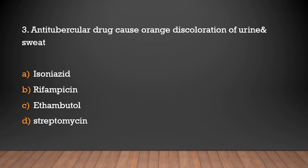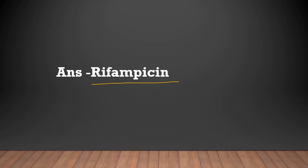Which anti-tubercular drug causes orange discoloration of urine and sweat? Isoniazid, Rifamycin, Ethambutol, or Streptomycin? Answer: Rifamycin. Rifamycin causes orange discoloration of sweat and urine.